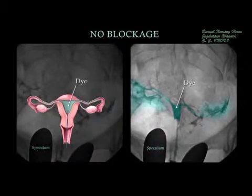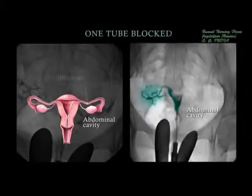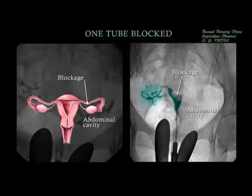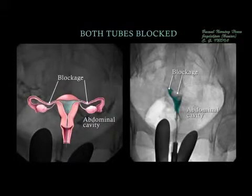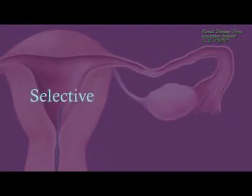If there is no blockage, the x-ray should show the dye flowing out of both fallopian tubes and into the surrounding abdominal cavity. If one fallopian tube is blocked, the dye will not spill out into the abdominal cavity on that side. In some cases, blockage can occur in both fallopian tubes, and the dye will remain within the endometrial cavity.